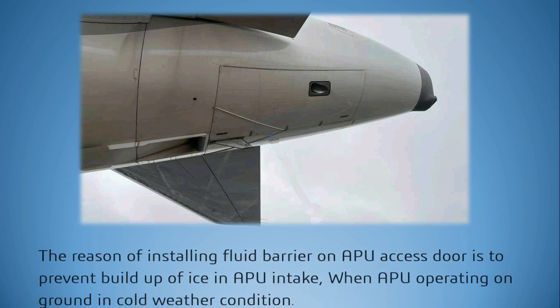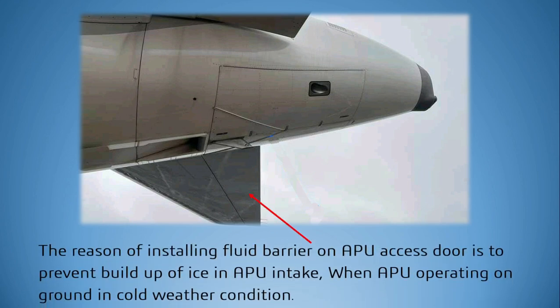When the APU is operating on the ground in cold weather conditions, the fluid barrier strip on the APU access door prevents a buildup of ice in the APU intake. Now let's understand how the APU door fluid barrier strip helps to prevent ice buildup in the APU intake.